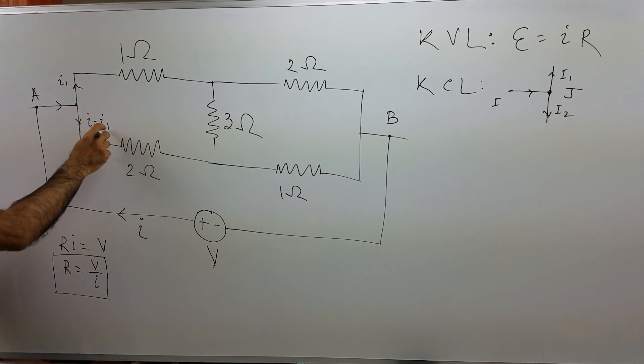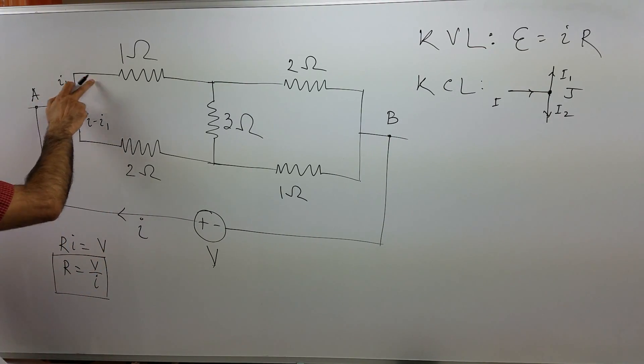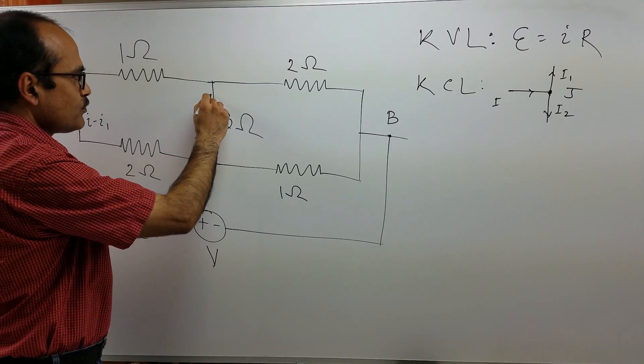This current is I minus I1, this current is I1. If we add them up, we get I and I is what entering into this junction. I1 flows here and suppose I2 flows here.